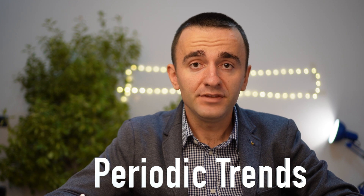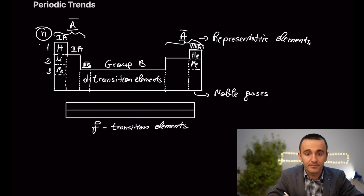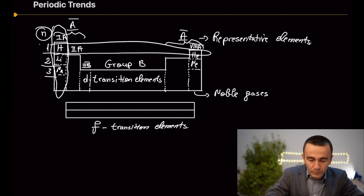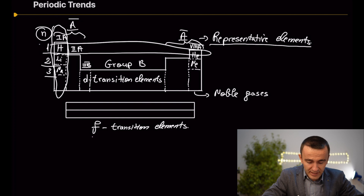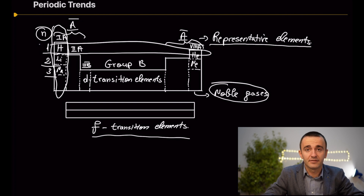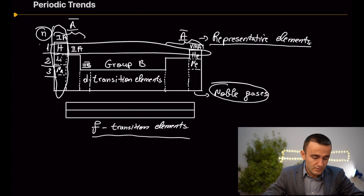In this video we are going to learn about periodic trends related to the periodic table. First, let's take a look at the periodic table to understand the basics. The periodic table contains periods, which are horizontal rows, and groups that are vertically arranged. We have Group A and Group B. Group A are called representative elements, Group B are called transition elements or transition metals. We also have f-block transition elements and noble gases, which are inert gases. There are some exceptions where they form compounds, but in most cases they do not participate in chemical reactions.